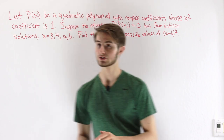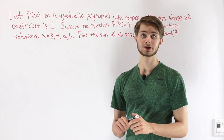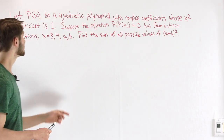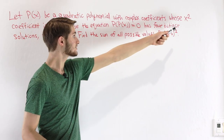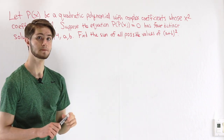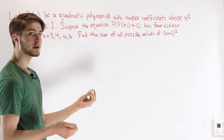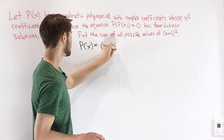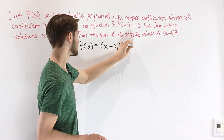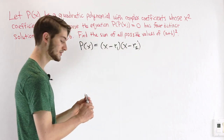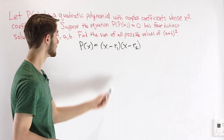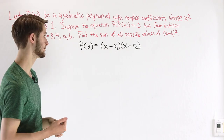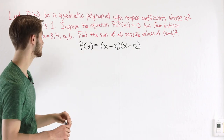Let's take a look at each of the elements of this question so that we get an idea of what exactly is going on. We know we're looking at a quadratic polynomial with an x squared coefficient of 1. We can write the polynomial as p of x equals x minus r1 times x minus r2, where r1 and r2 are the two roots of the quadratic polynomial — we're basically just factoring it based on the roots.